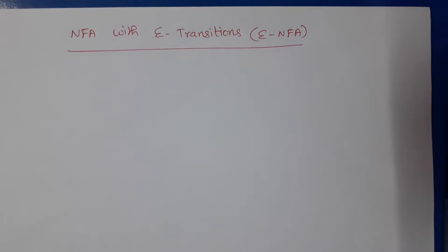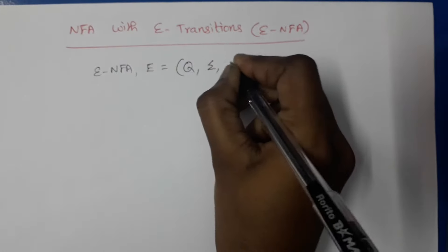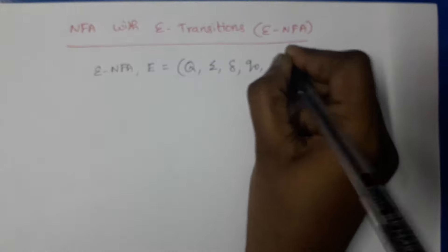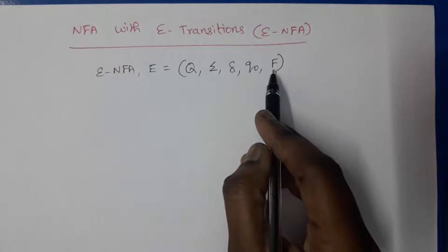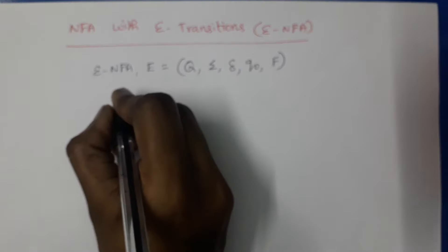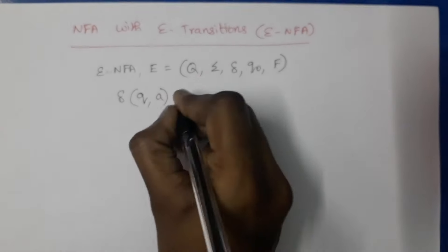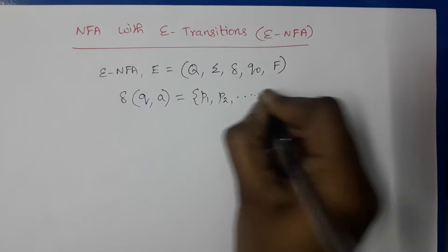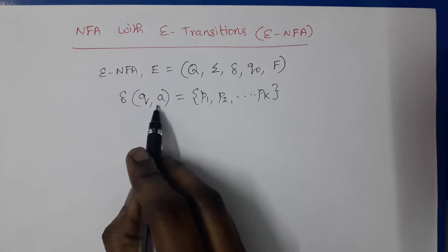We can formally represent Epsilon NFA with five tuples, similar to NFA. Epsilon NFA E is equal to Q, Sigma, delta, q-naught, F. Where E represents the name of the Epsilon NFA, Q means finite set of states, Sigma is the finite set of input symbols, q-naught is the start state, and F is the set of final or accepting states. These are similar to NFA, and the only difference is in the transition function. Delta of q comma a equals p1, p2, up to pk.